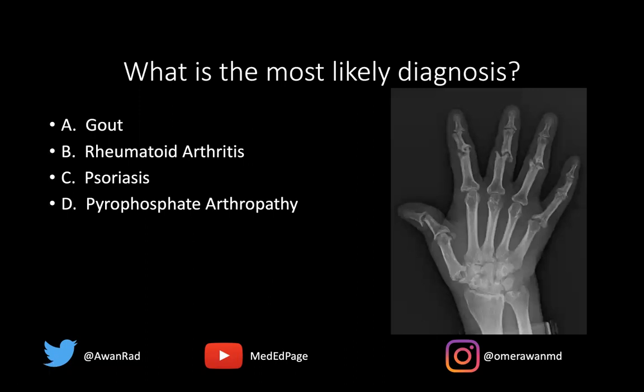Is this a case of gout, rheumatoid arthritis, psoriasis, or pyrophosphate arthropathy? The answer here is psoriasis, and this is a tough case. There are erosions here, and this is obviously a case of inflammatory arthropathy. So I want to talk about why this is a case of psoriatic arthropathy and not the other answers.